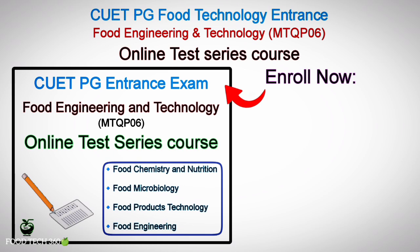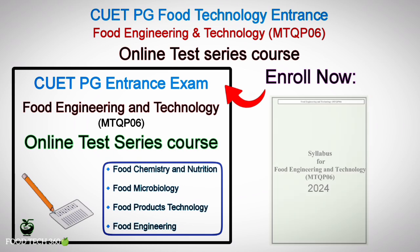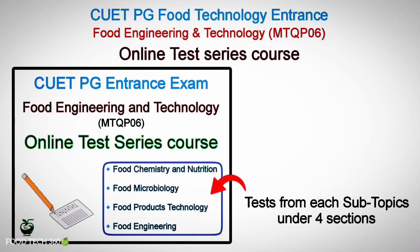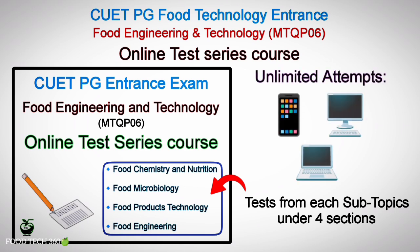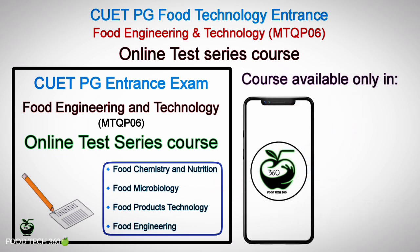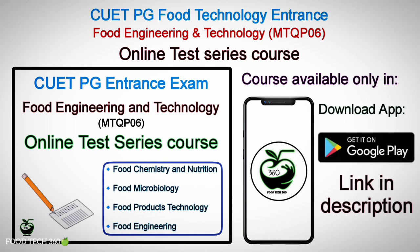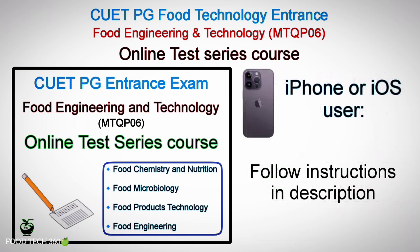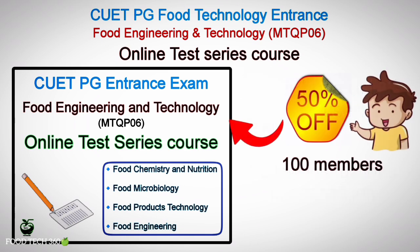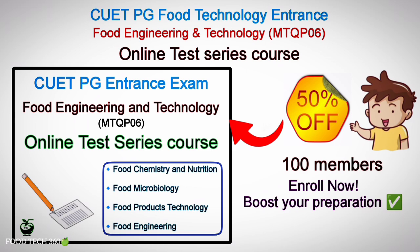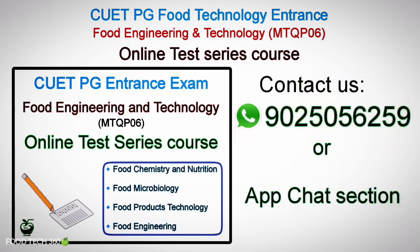Foodtech360 has launched an online test series course for COETPG Food Engineering and Technology Entrance Exam, exactly as per the current syllabus. You will get test series from all four sections and the subtopics under each section. You can attend this test unlimited times from your phone, desktop, or laptop. This test series course is available only in the Foodtech360 Android app. Download the app now from the Google Play Store or through the download link given in the description. If you are an iPhone or iOS user, kindly follow the instructions given in the description to access the app. We are currently providing this course at 50% discount for the first 100 members, so enroll now to boost your preparation. For further queries or guidance, you can contact us through WhatsApp or the app chat section.